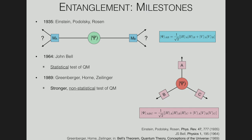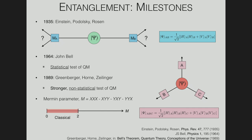Mermin proposed an inequality — just as Bell proposed a test of two-particle entanglement — that required measuring joint observables on all three particles, essentially σ_X and σ_Y. Measuring a Mermin parameter between zero and two is explained by local hidden variable theories; measuring it between two and four implies that nature behaves in a non-local manner.